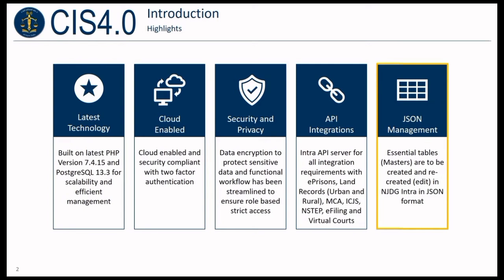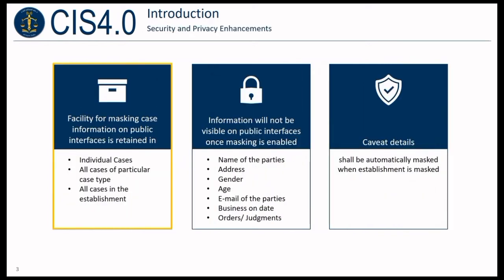Creation and management of JSONs in NJDG Intra is supported. Facility for masking case information on public interfaces is retained for individual cases, all cases of a particular case type, and all cases in the establishment. Information such as name of the parties, address, gender, age, email, business on date, orders, and judgments will not be visible on public interfaces once masking is enabled. Caveat details shall be automatically masked when the establishment is masked.